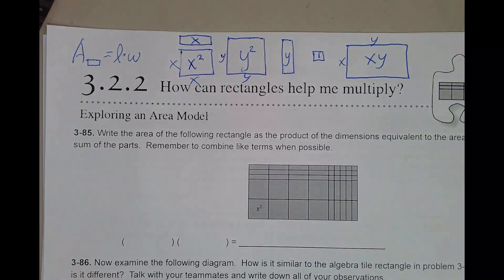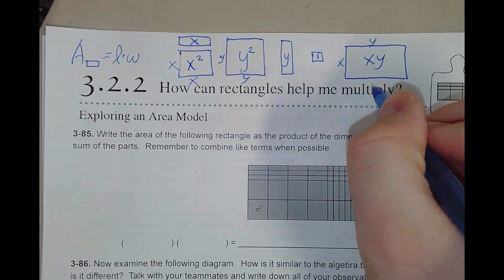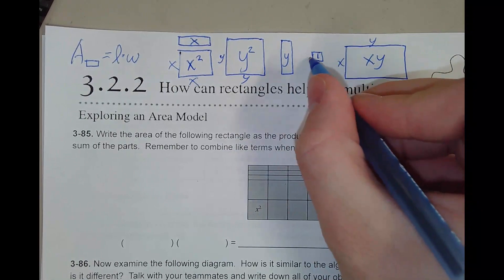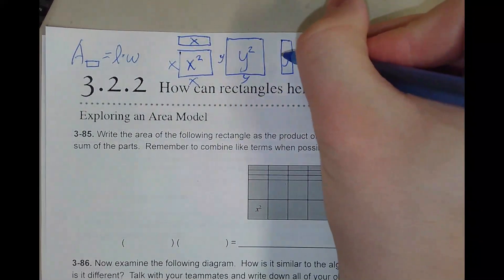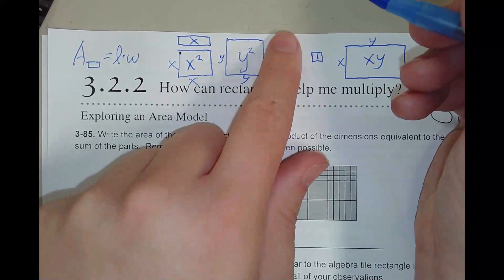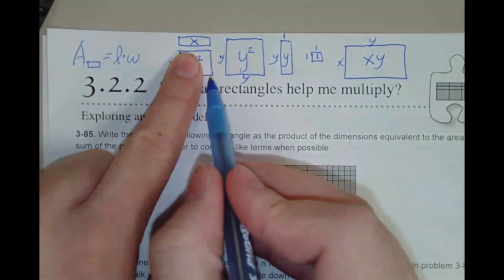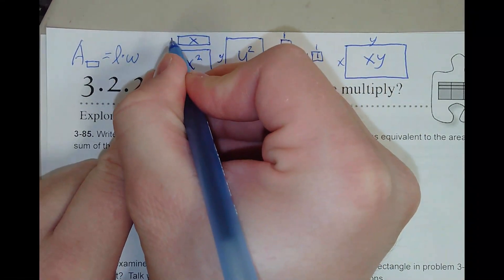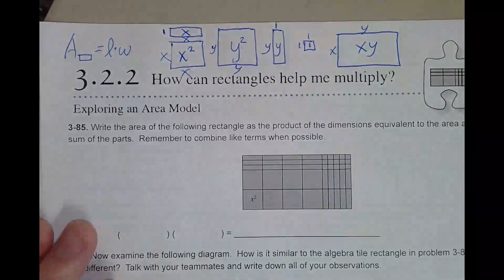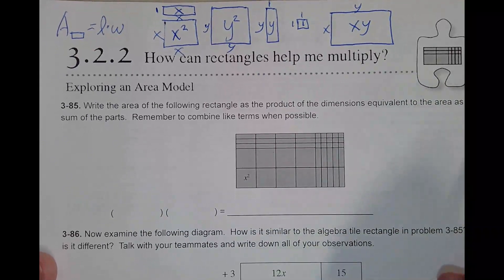Don't second-guess things. If you see a really small side, don't overthink it — the length of that side is likely just 1. So this one is y times 1, which is just y. One times one is one. And the x-tile: a really small side is one by x, so one times x is x. With that said, let's go over problem 385 and continue practicing for our quiz.